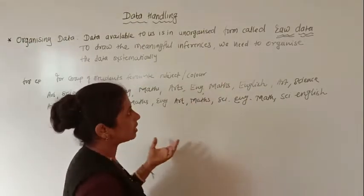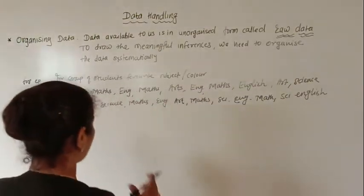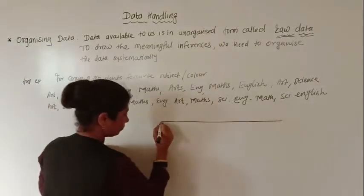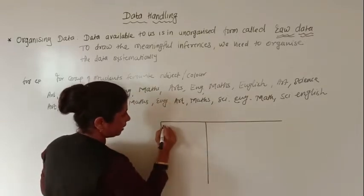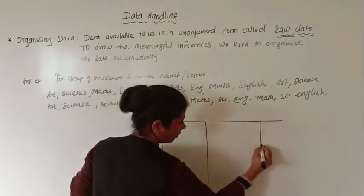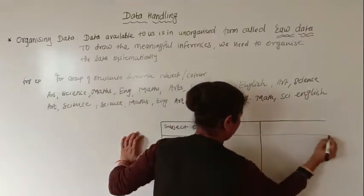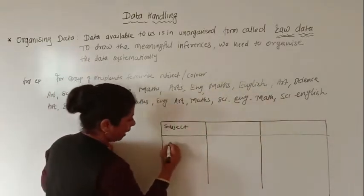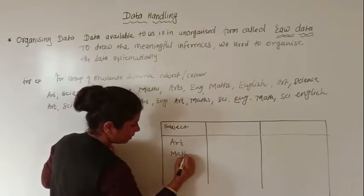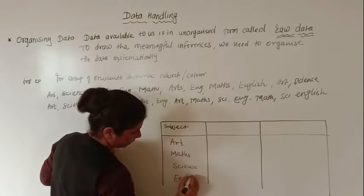To get the needed inferences, we need to organize this systematically. We will set the information in a table. I will draw a table now with a 'Subject' column. The subjects are art, maths, science, and English — mostly four subjects are there.